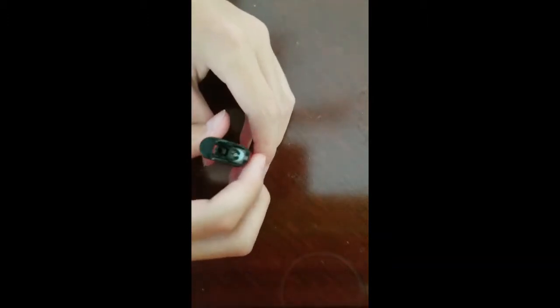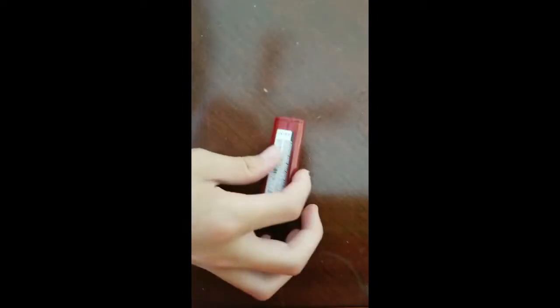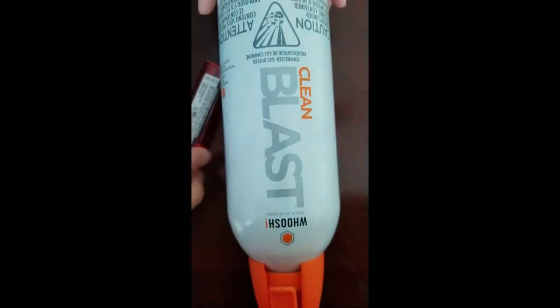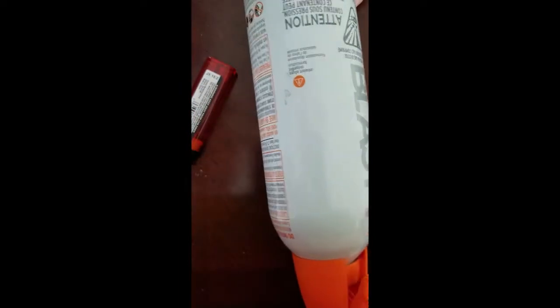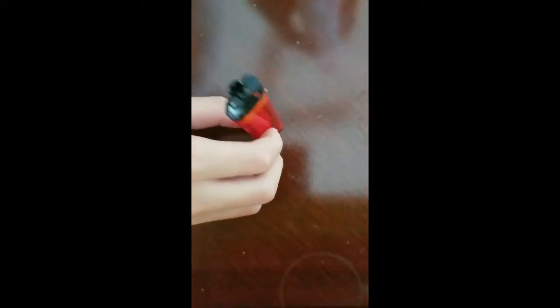Once you've done that, you need to load in what will shoot out and become ice. I'm using butane, but if you can't use butane, you can use computer dust air or keyboard cleaners. It's just compressed air, essentially.